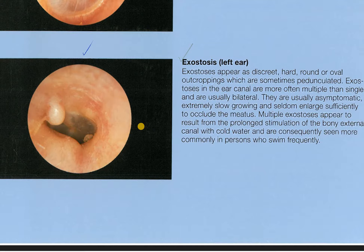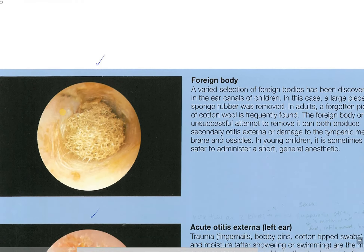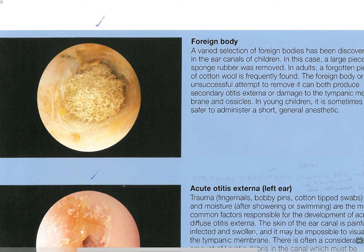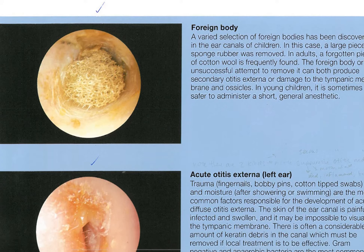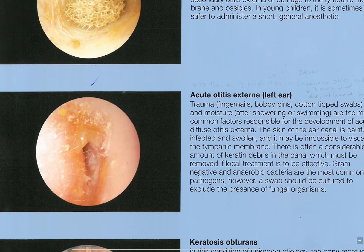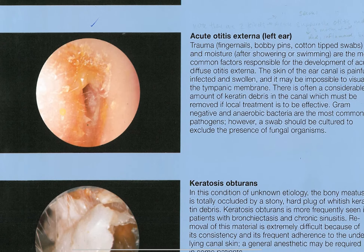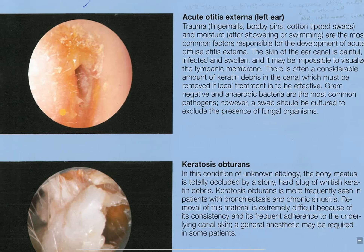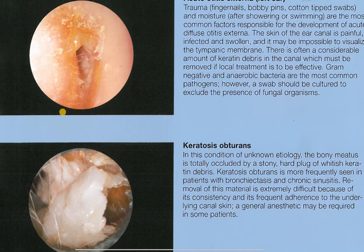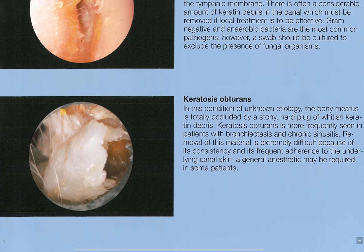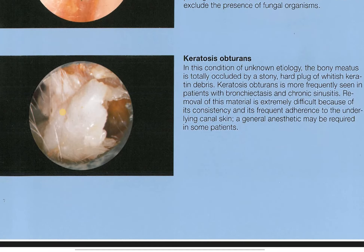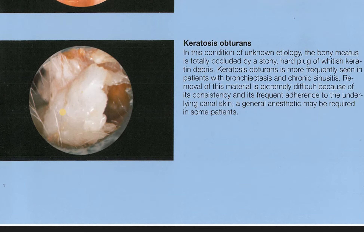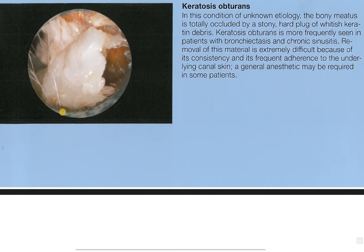Now we're going to get into some legitimate disorders of the ear. We've got some outcroppings here coming out of the ear, and a foreign object — I've seen foreign objects in people's ears. Acute otitis externa — this is an aggressive form of swimmer's ear. Keratosis: just abnormal growth of the keratinization process. That's pretty aggressive.